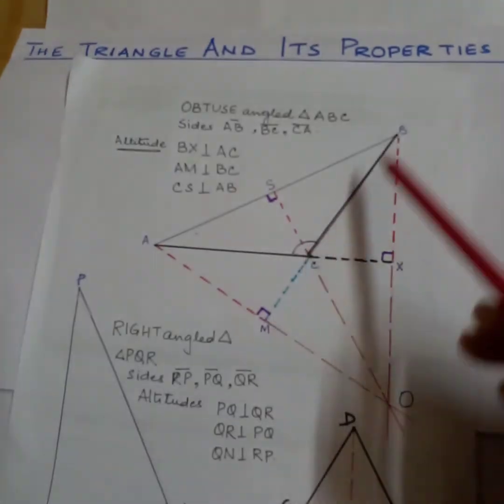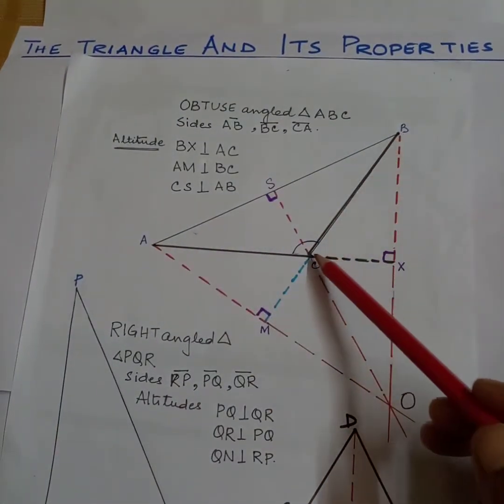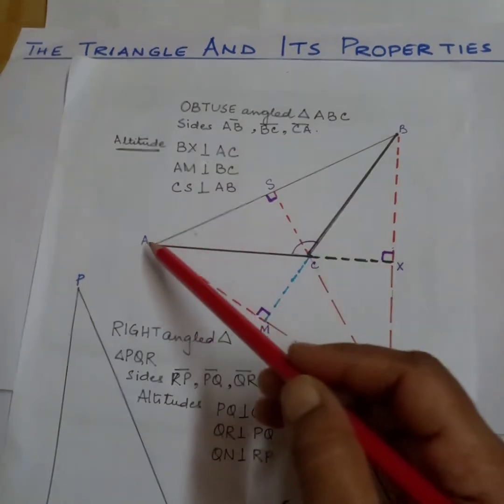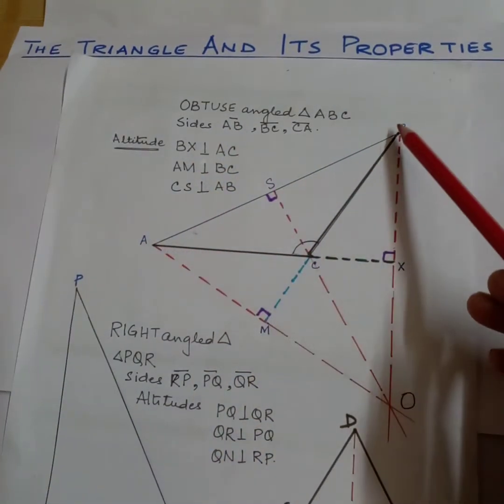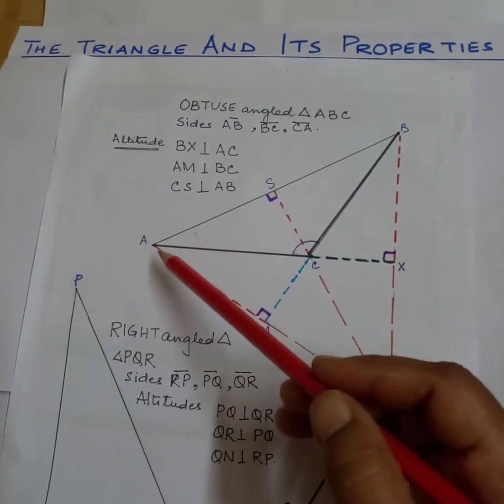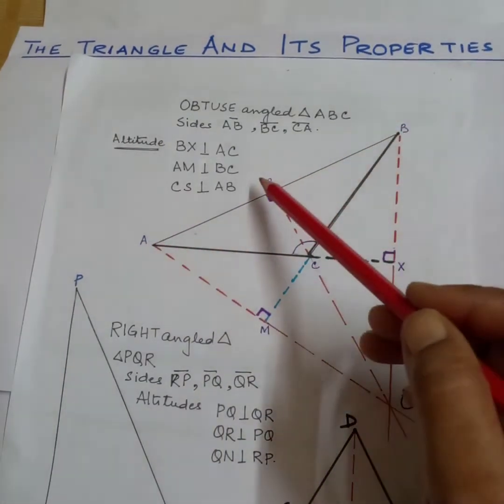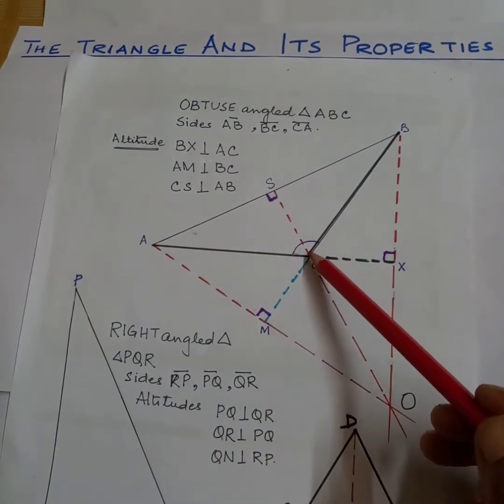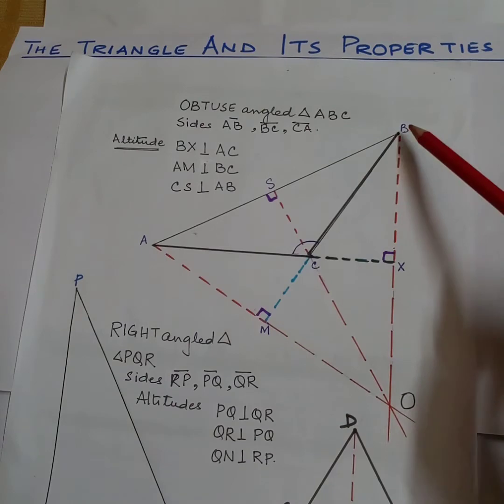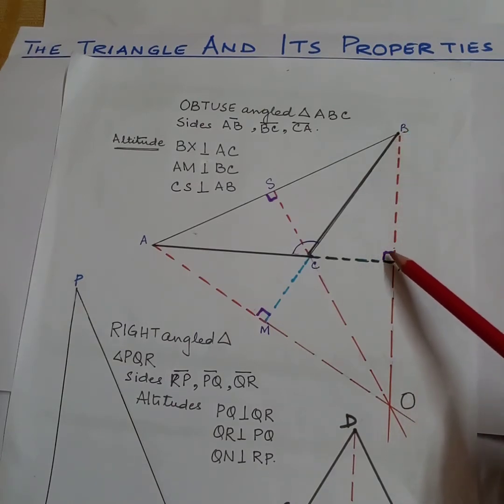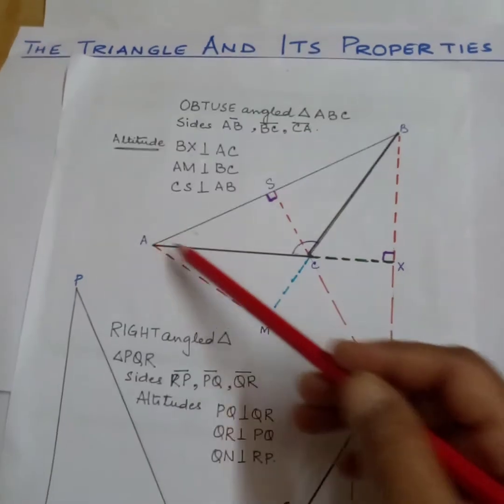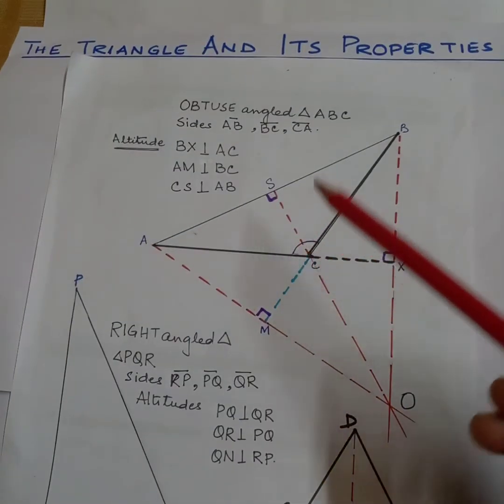See, this is an obtuse triangle. Now the sides are AB, BC, and CA. The three altitudes are: from AB the altitude is SC, from AC the altitude is BX, and from BC the altitude is AM. So this is an obtuse triangle.